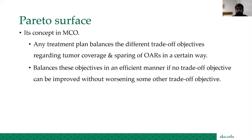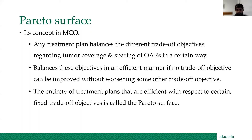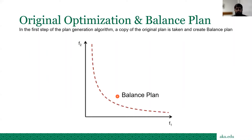It's a kind of give and take, especially in cases with overlapping structures where decision-making is tough. In those cases we have to give up some organ sparing to save others, and sometimes we have to reduce the target dose as well — it depends on the clinical decision. The entirety of treatment plans that are efficient with respect to certain fixed trade-off objectives is called the Pareto surface.